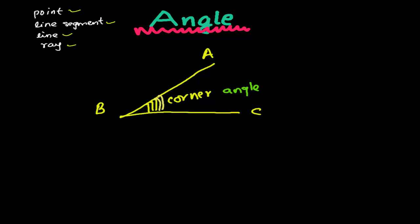This corner formed at the intersection is exactly what we call an angle. The more the corner, the greater the angle; the smaller the corner, the smaller the angle. So this is exactly what an angle is.